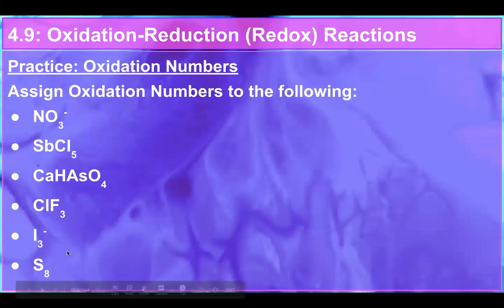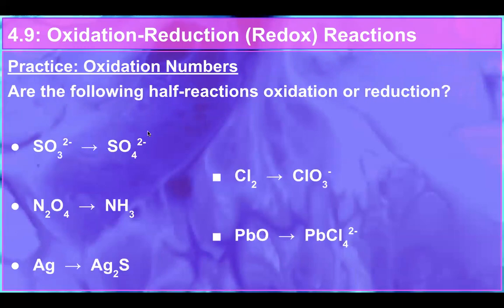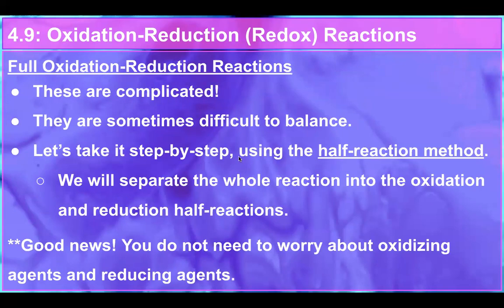Here are some practice problems. Try these on your own — don't forget about the charges, so we have NO₃⁻ and I₃⁻. And for the next set, figure out whether these reactions are oxidation or reduction. I will have answers for you later.